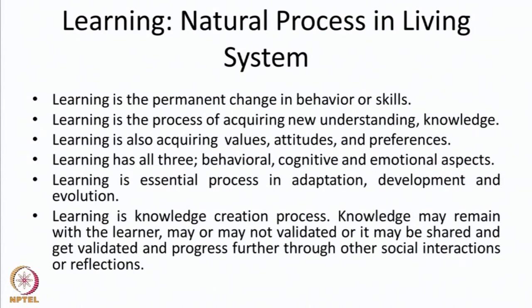Learning happens at three levels: behavioral level, cognitive level and emotional level. Learning is an essential process in adaptation, development and evolution. All living systems receive feedback from their environment. Feedback helps them to learn something new and it is through the learning process that they adapt to the environment.